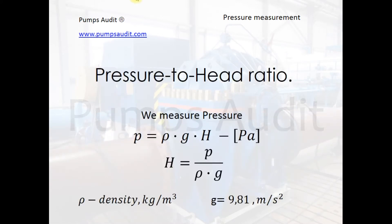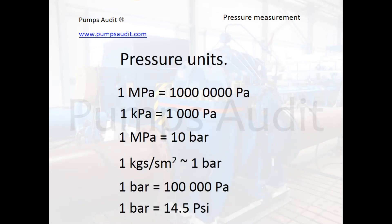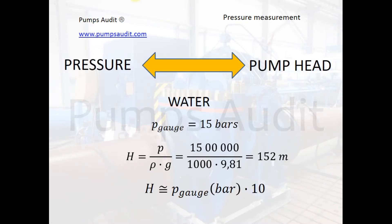The pressure-to-head ratio is worth keeping in mind every time we measure a pressure. This formula shows that pressure is equal to head multiplied by density and gravitational acceleration. On the other hand, head is the pressure divided by gravitational acceleration and density. These are the most popular units of pressure we use and ratios between some of them. For approximate evaluation of pump head using pressure measurements, a simplified ratio can be used. For example, for cold water, head is equal to pressure in bars multiplied by 10.